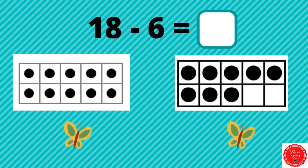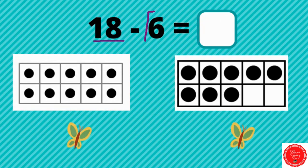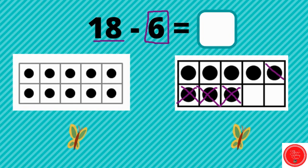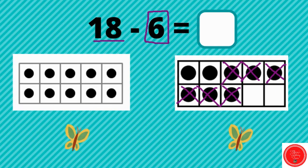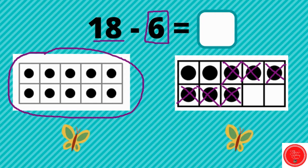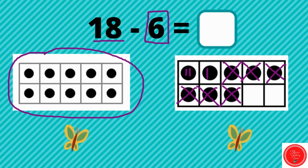18 minus 6. So right now we're starting out with 18. How many do we need to take away? 6. 1, 2, 3, 4, 5, 6. Now let's see how many we have left. I know that this is 10, so I can just say 10, and then count on: 10, 11, 12. 18 minus 6 equals 12.